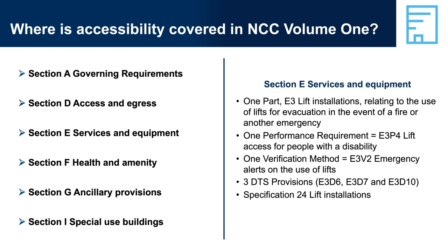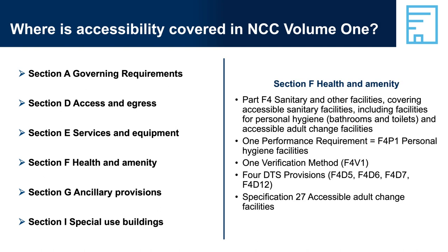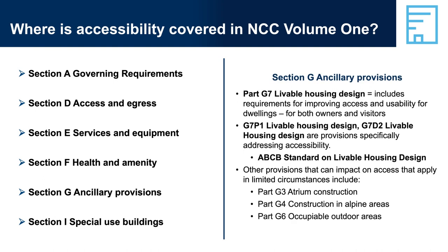Section E, Services and Equipment, contains provisions related to the use of lifts for the evacuation of people with disability. It has one relevant performance requirement, one verification method, three DTS provisions, and one relevant specification. Section F, Health and Amenity, contains provisions related to the provision of sanitary facilities that are accessible — it has one relevant performance requirement, one verification method, four DTS provisions, and one relevant specification. Section G, Ancillary Provisions, contains one relevant performance requirement and one DTS provision concerning livable housing design requirements for Class 2 buildings.